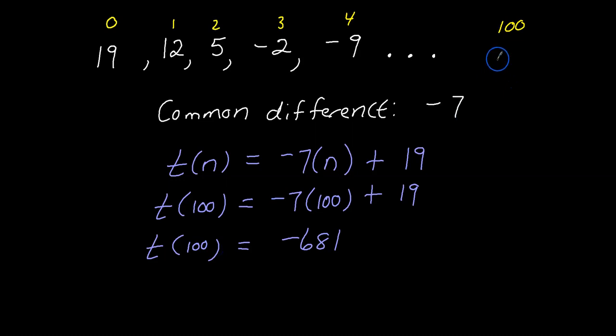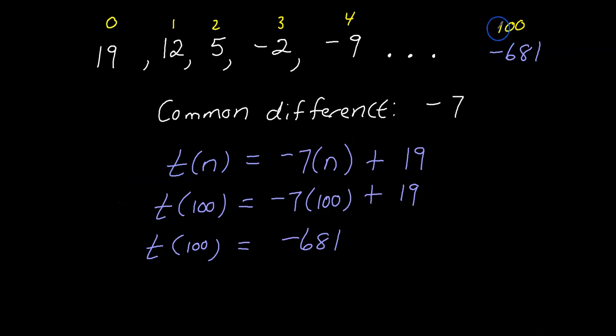So term 100 is negative 681. Make sure you can write the explicit formula to quickly evaluate terms far down in a sequence. I really hope this was helpful — have a great day!